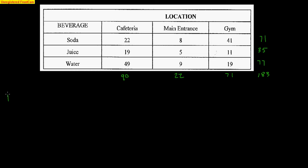So I can ask you some very basic questions like, what's the probability that soda was purchased? Well, that's going to be very easy. 71 sodas were purchased out of 183 total different things purchased. What's the probability that somebody went to the cafeteria to use the vending machine? Well, 90 people went to the cafeteria out of 183.